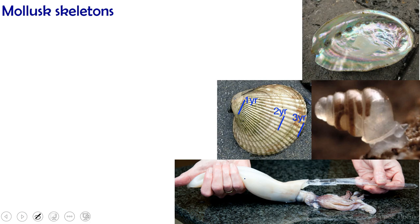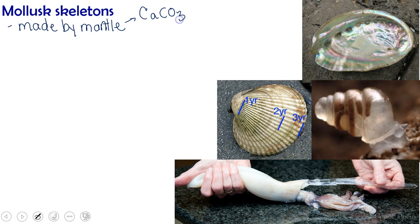Mollusk skeletons are made by the mantle. Most are made of calcium carbonate, that mineral we talked about before with our cnidarians. The inner layer, however, is something called mother of pearl, or nacre, which is the shiny material that you see on the insides of abalone or oysters. And that is what, layered up, helps create a pearl inside an oyster.